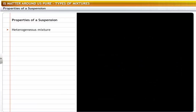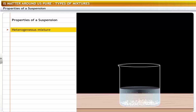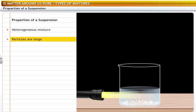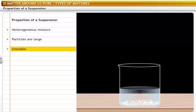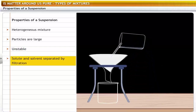A suspension is a heterogeneous mixture. The particles of a suspension are quite large and they scatter a beam of light passing through the suspension, making its path visible. A suspension is unstable — when left undisturbed, its solute particles settle down at the bottom of the container. The solute in a suspension can be separated from the mixture by the process of filtration.